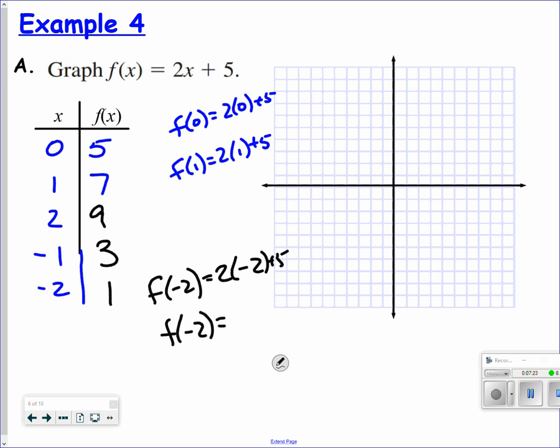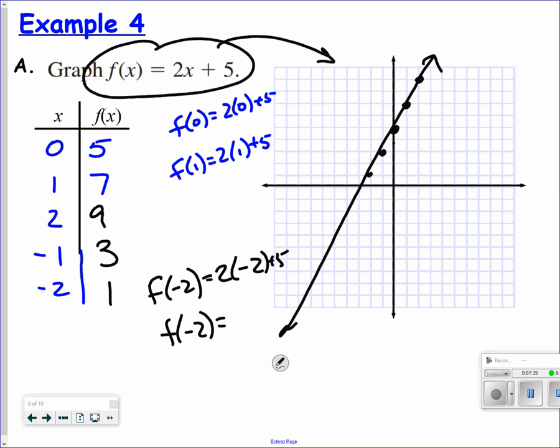Graph those points. So I'd have 0, 5; 1, 7; 2, 9; negative 1, 3. And so this will make a linear function. This function notation makes that line.